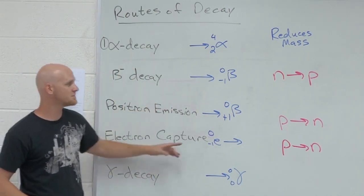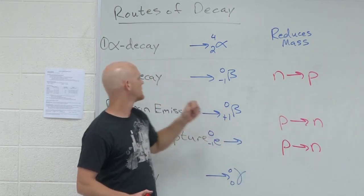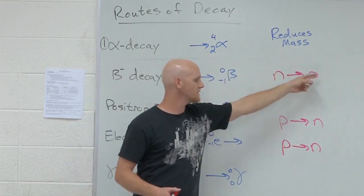Positron emission and electron capture both convert a proton into a neutron, whereas beta decay converts a neutron into a proton.